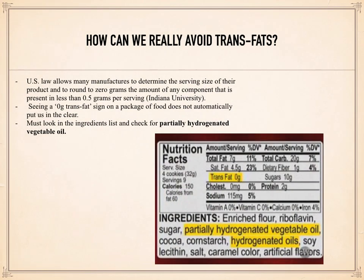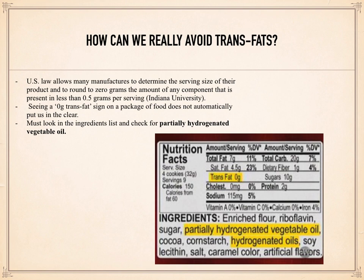Avoiding trans fats altogether here in the United States is not as easy as one may think. As Indiana University points out, it is simply not as straightforward as reading the nutrition facts label on the package. Shockingly, United States law allows many manufacturers to determine the serving size of their product and to round to 0 grams the amount of any component that is present in less than 0.5 grams per serving. Seeing a 0 grams of trans fat sign on the package does not automatically put us in the clear. In order to be certain, we must look at the ingredients list and check for partially hydrogenated vegetable oil. As you can see in the nutritional facts label to the right, although the trans fat is labeled as 0 grams, the product actually does include both partially hydrogenated vegetable oil and even hydrogenated oils. This is very misleading and can lead to the consumption of toxic foods. In short, we should all try to decrease our consumption of trans fats and stick with the healthy cis fats in order to ensure that we live longer, healthier lives.